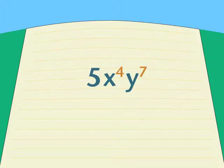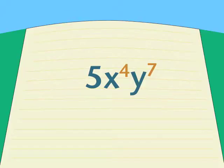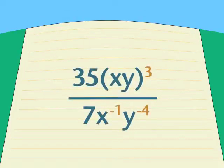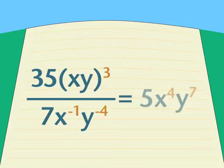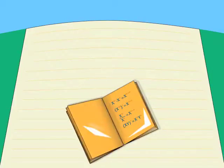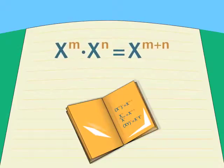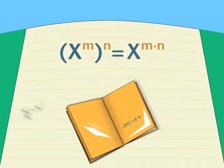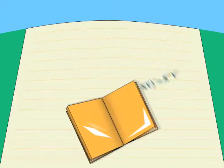So our final answer is 5x to the fourth y to the seventh. Do you see how big messy expressions can be easy to simplify when you take them one small step at a time? Be sure to try more problems right away while the exponent rules are still fresh in your mind. Find them in your textbook or the study guide.